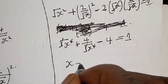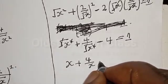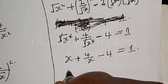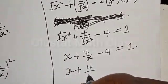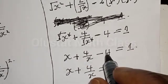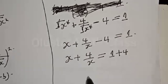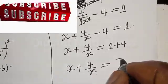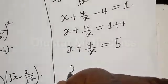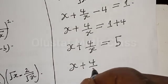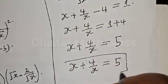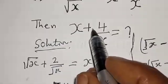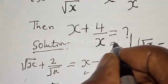We have s plus 4 divided by s minus 4 equals 1. Moving minus 4 across gives s plus 4 divided by s equals 1 plus 4, which is 5. Therefore our final answer is s plus 4 divided by s equals 5. From the initial question, we were asked to find the value of s plus 4 divided by s, which equals 5.